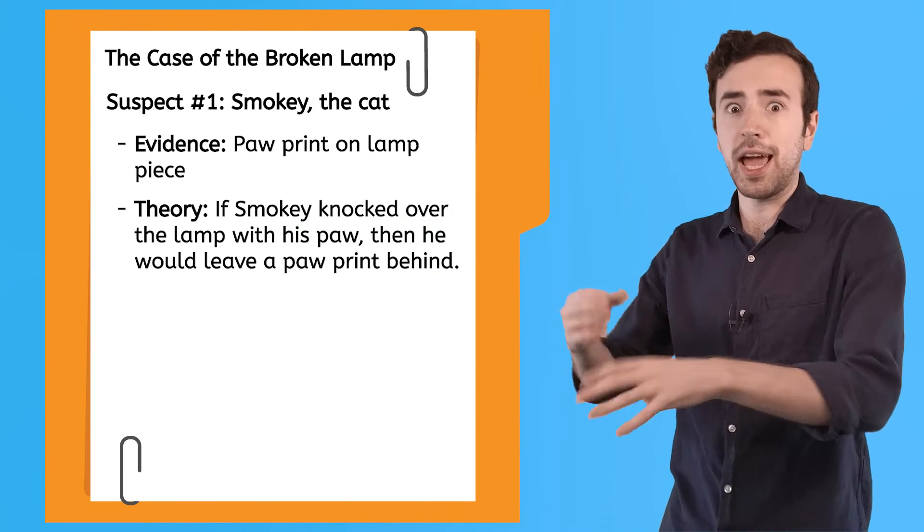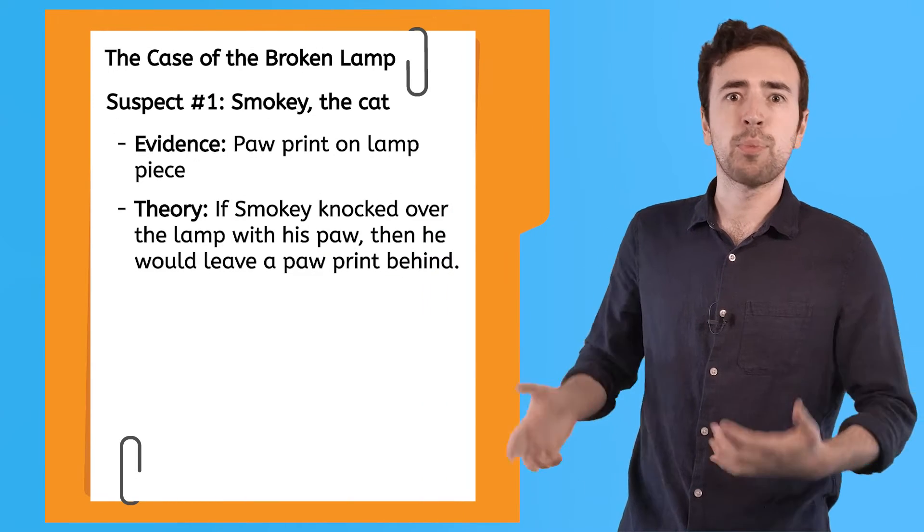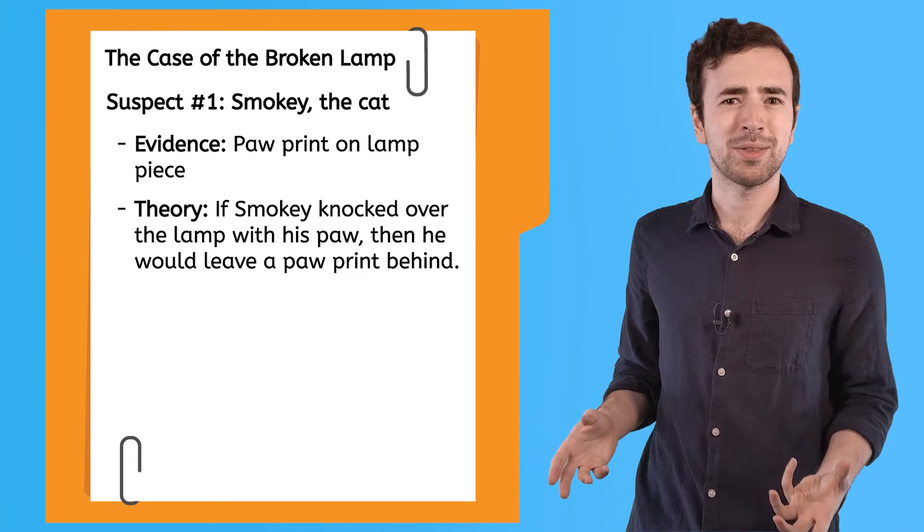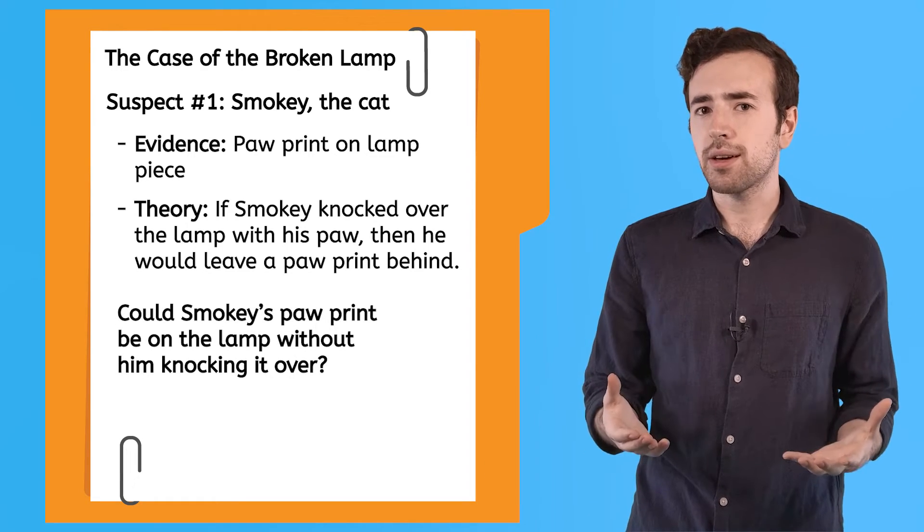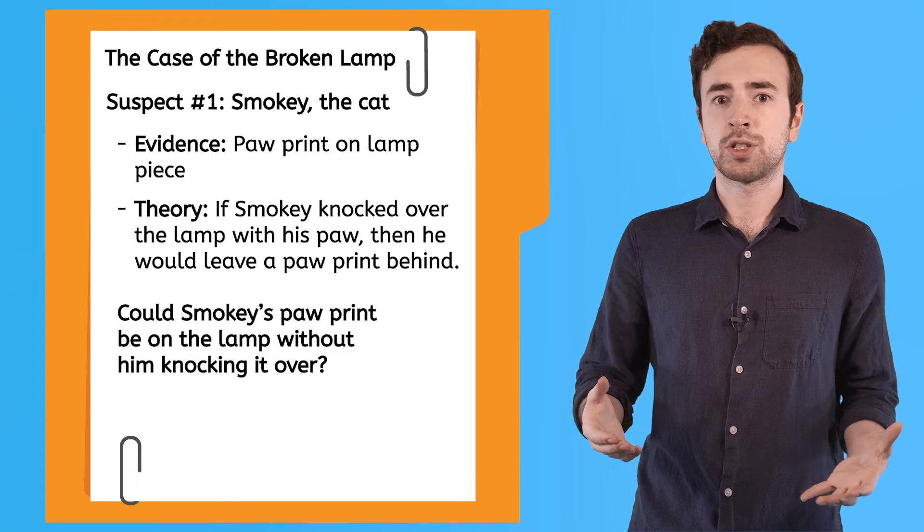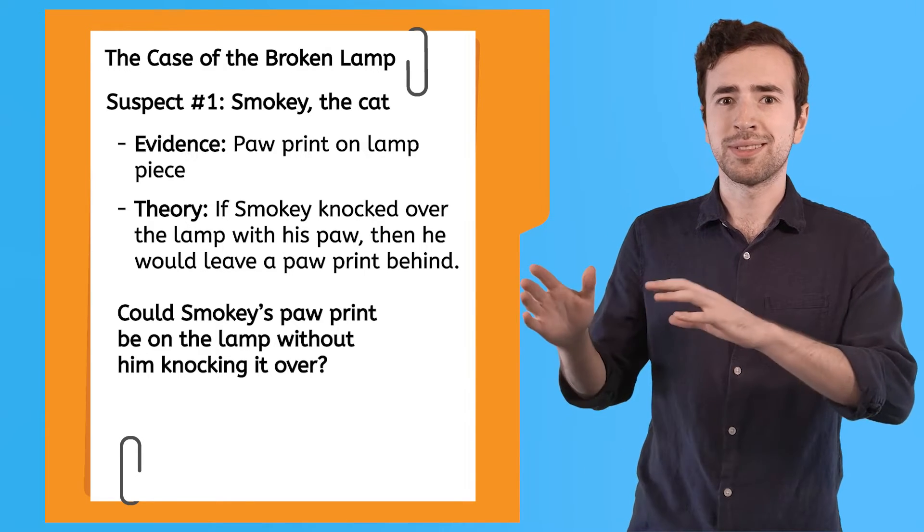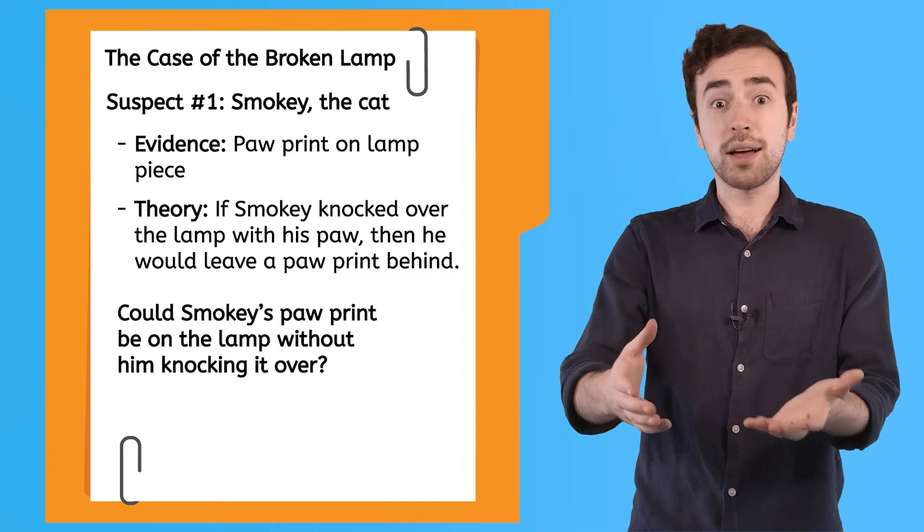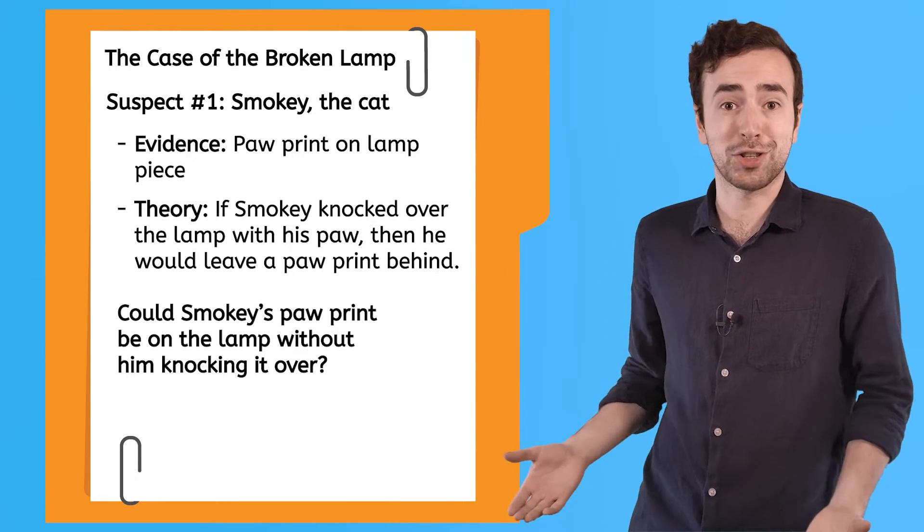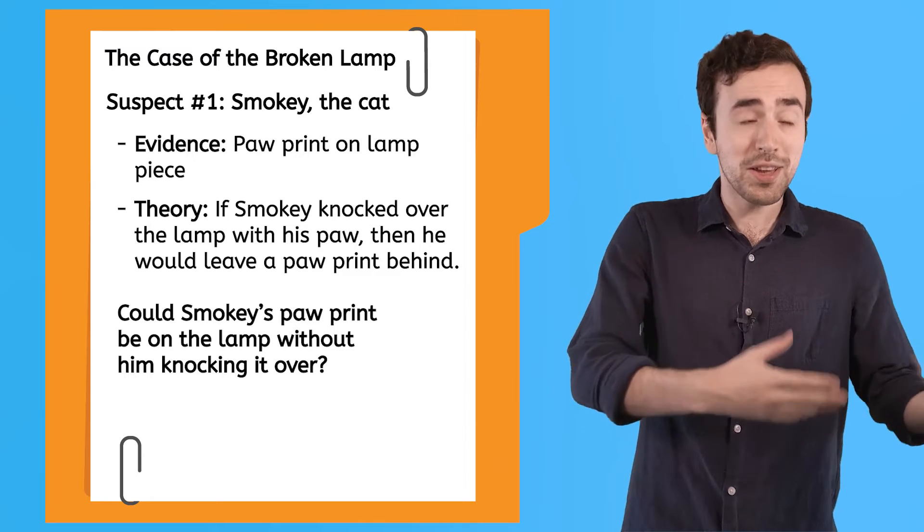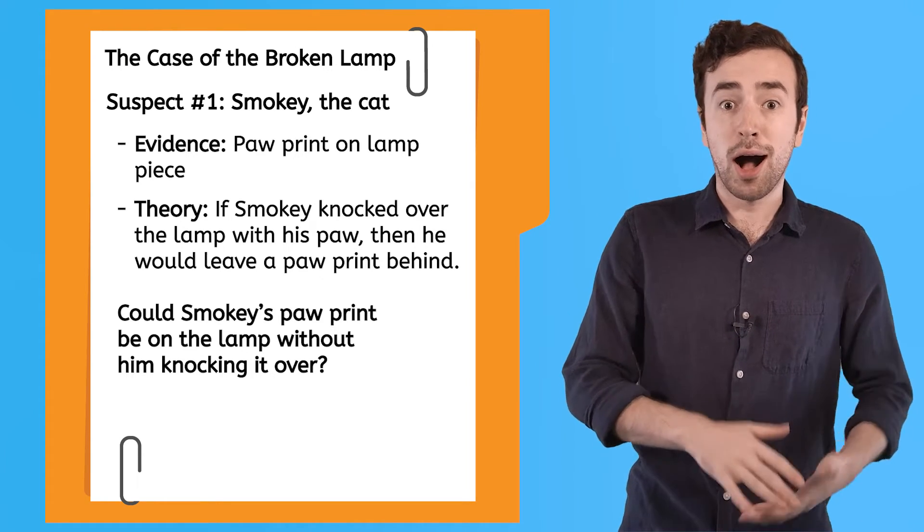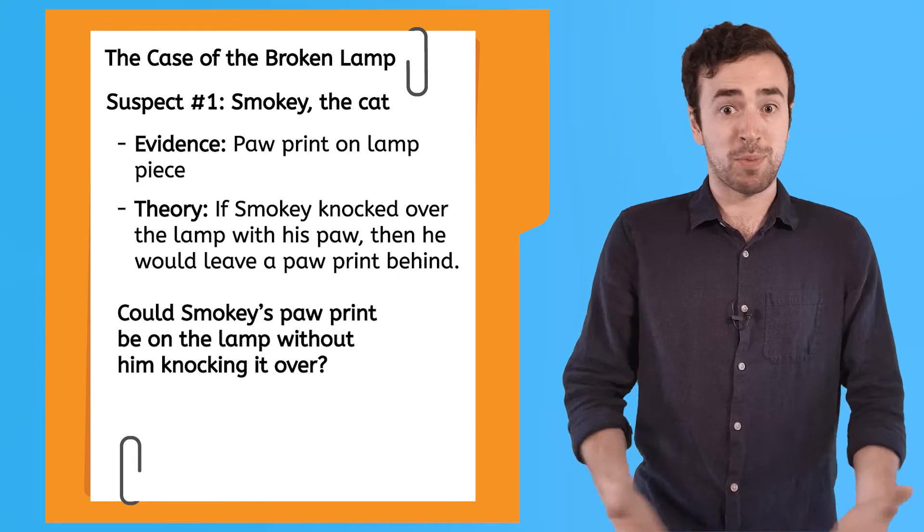And as for the evidence I have against Smokey, the paw print on the lamp piece, I don't think that means he's guilty. Can you think of a situation in which Smokey left that paw print, but didn't knock the lamp over? Yeah, exactly. Maybe he just touched the lamp a few days ago before it even got knocked over. Maybe he even put his paw on the piece after it was already smashed on the ground.